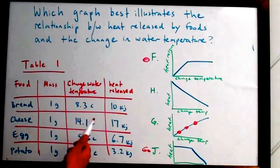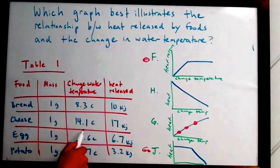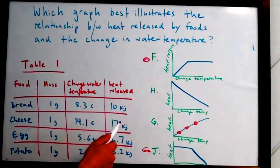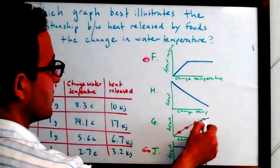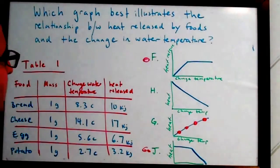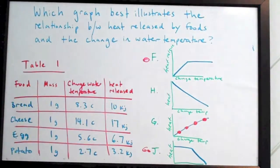And then finally, the highest degree of water temperature change is the cheese at 14.1 degrees Celsius, rendering 17 kilojoules of heat released. You have to put the graph back into order from least to greatest change of water temperature, and then see what the outcomes are. And clearly, this is a linear relationship between the two.